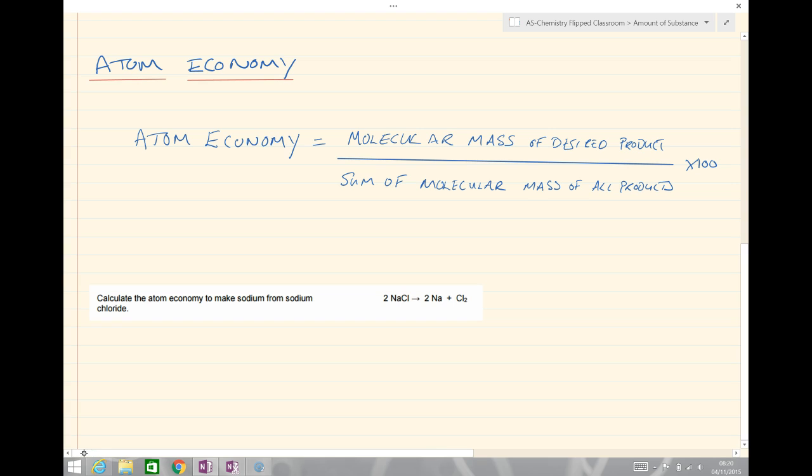And importantly, the higher the percentage atom economy, the more we're going to get out as a business in terms of a useful product. So here's our equation. The percentage atom economy is equal to the molecular mass of the desired product over the sum of the molecular masses of all products times by 100.